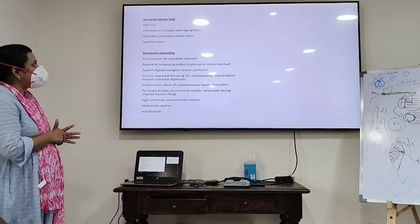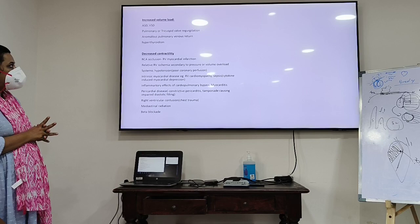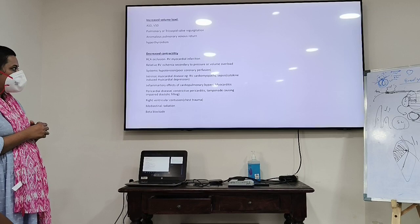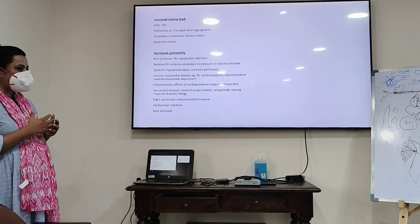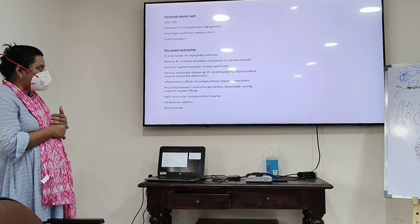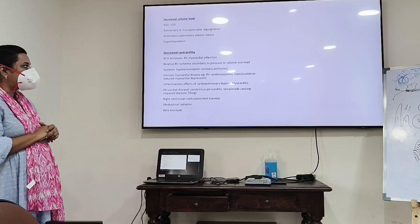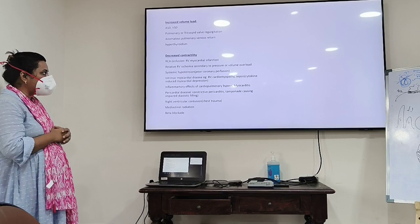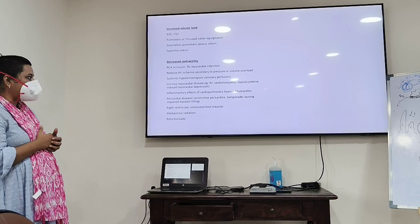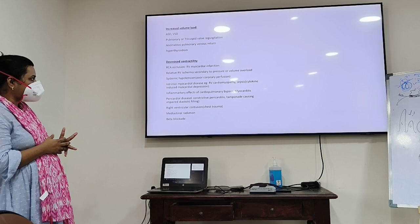Increased volume load causes: ASD, VSD, pulmonary and tricuspid valve regurgitation, hyperthyroidism, anomalous pulmonary venous return. Decreased contractility causes: RCA occlusion/RVMI; relative RV ischemia secondary to pressure or volume overload — as the RV dilates and contracts faster leading to myocardial ischemia; systemic hypotension causing poor coronary perfusion especially as RV perfusion also occurs in systole. Intrinsic myocardial disease: RV cardiomyopathy, sepsis, cytokine-induced myocardial depression. Pericardial disease: constrictive pericarditis, tamponade causing impaired diastolic filling; right ventricular contusions in chest trauma.